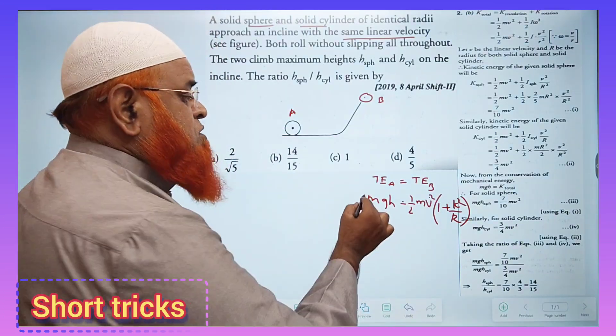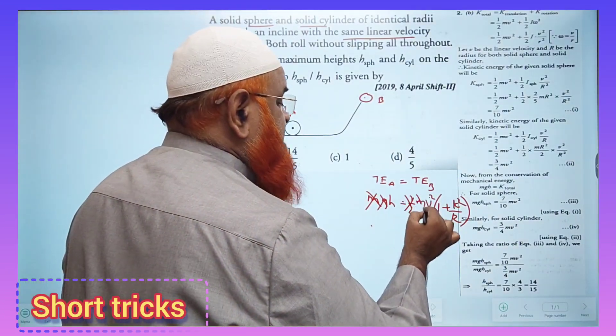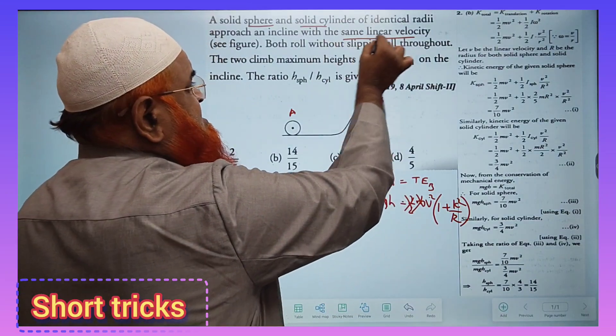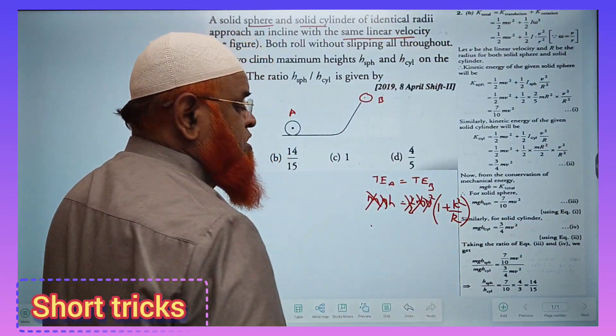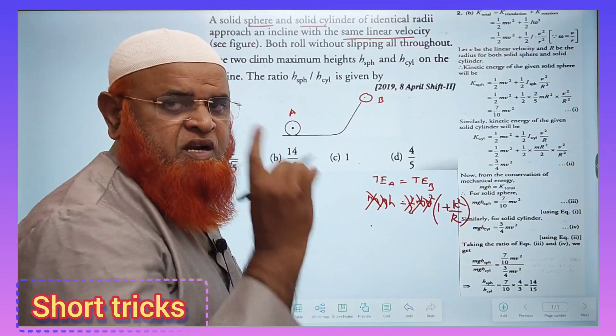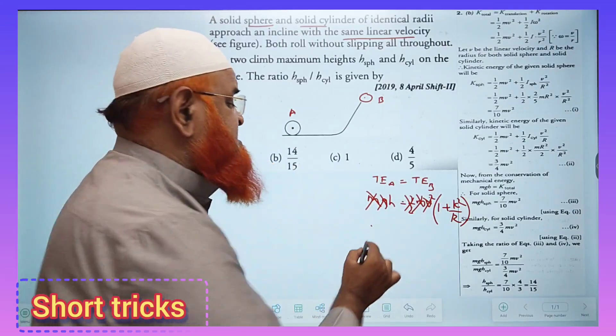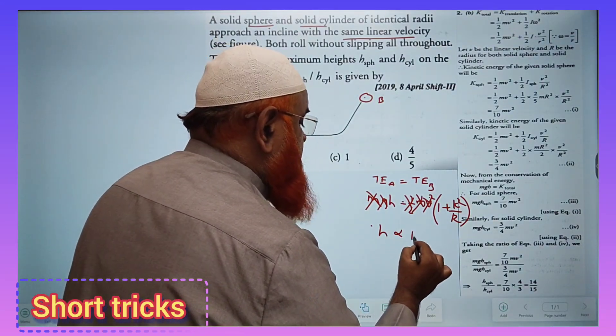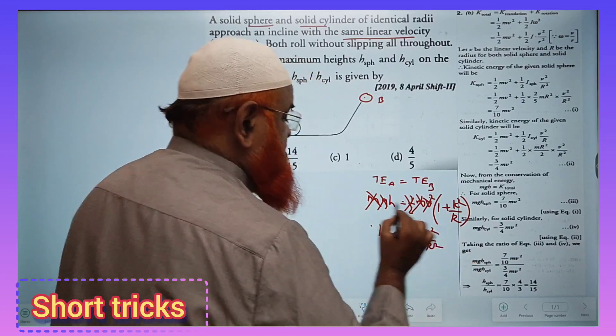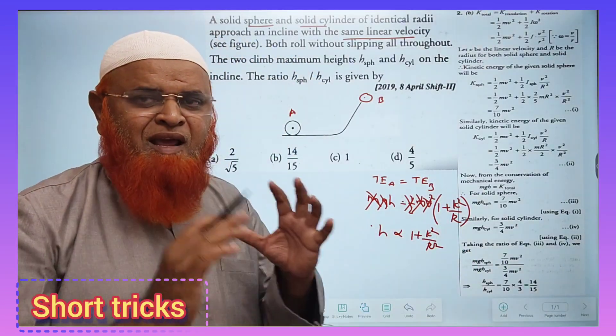Mass is constant, g is constant, half is constant, and velocity is constant. From this formula, you can pick up only two variables: H is directly proportional to (1 + K²/R²). This relation will help you solve the problem in less than 15 seconds.